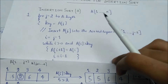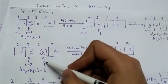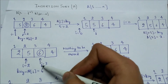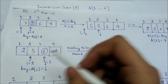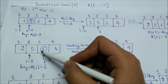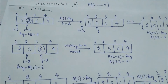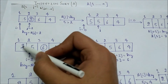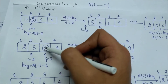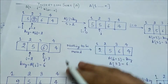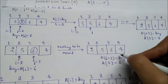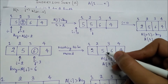Now j is incremented to three, so key is six and i is two. We check whether a[i] is greater than key: a[2] is five, and five is not greater than six, so the while loop does not execute. There is nothing to move because these elements are already sorted relative to six. We simply place six at a[3], and it remains in its current position.